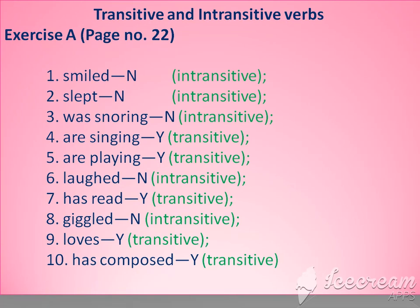Now open your Grammar Tree to page number 22. There is an exercise for you — Exercise A for transitive and intransitive verbs. You can see the sentences and write your answers. Keep in mind: intransitive means there is no direct object; transitive means there is a direct object.